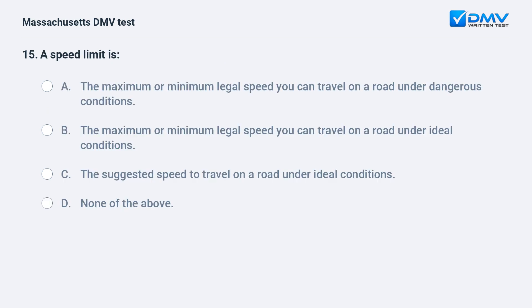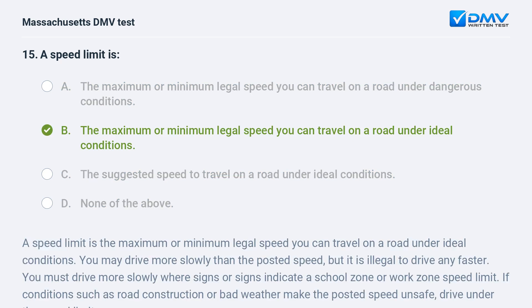A speed limit is: a. the maximum or minimum legal speed you can travel on a road under dangerous conditions. b. the maximum or minimum legal speed you can travel on a road under ideal conditions. Answer: b. A speed limit is the maximum or minimum legal speed you can travel on a road under ideal conditions.